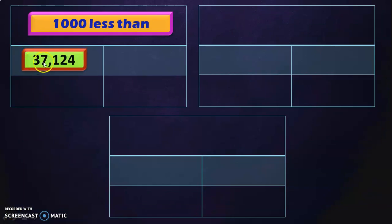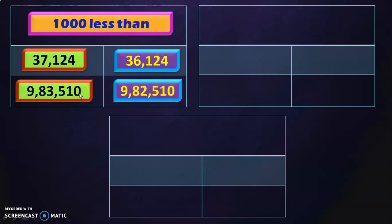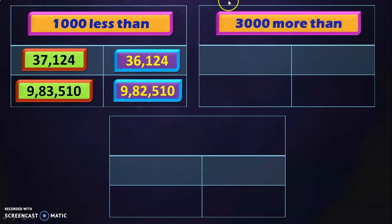Using the same logic, 1000 less than 37,124 is 36,124. The next number is 9,83,510 — 1000 less than this is 9,82,510.